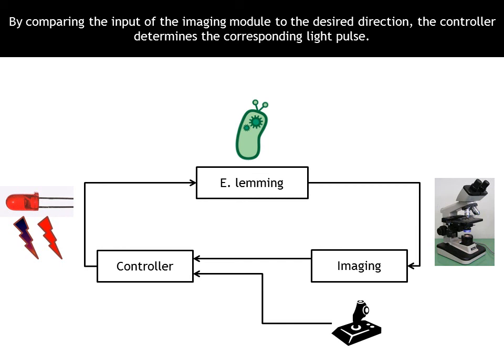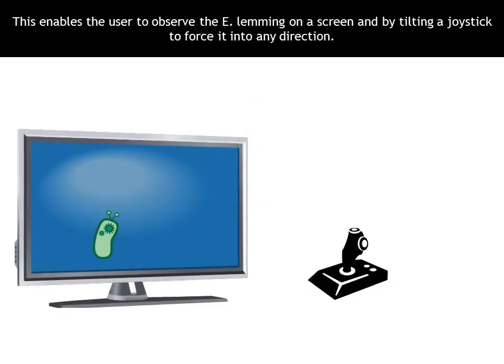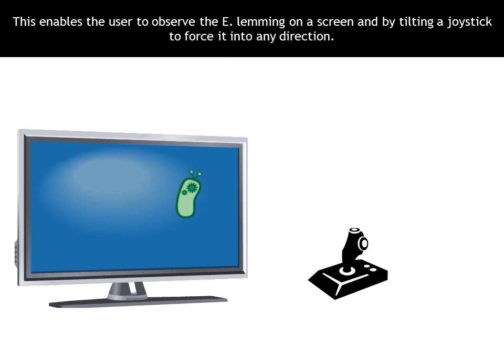By comparing the input of the imaging module to the desired direction, the controller determines the corresponding light pulse. This enables the user to observe the e-lemming on a screen and, by tilting a joystick, to force it into any direction.